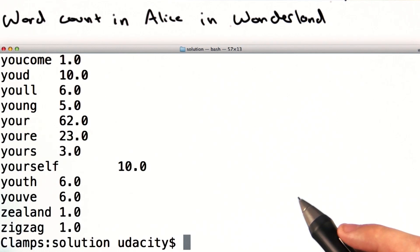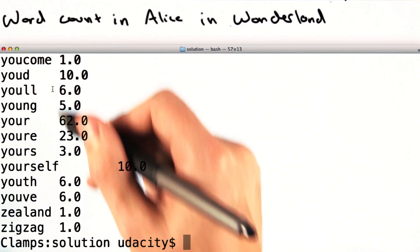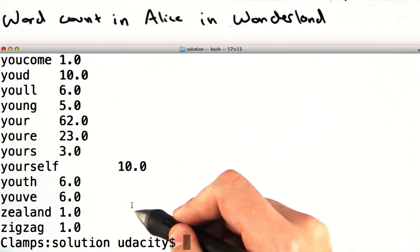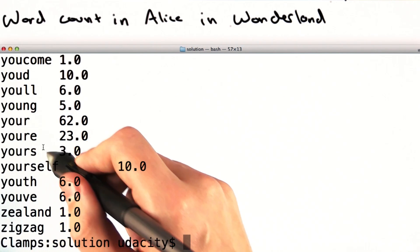If we run the script, we see that we have an output where we have all of the words that appear in Alice in Wonderland and the number of times that each of those words occurs. Note that all of the words are lowercase and are stripped of all punctuation.